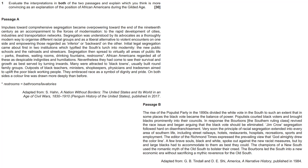Nevertheless, they had come to see their survival and growth as best served by turning inwards. Many were attracted to black towns, usually built around family groups. Outposts of black teachers, ministers, shopkeepers, physicians, and tradesmen aimed to uplift the poor black working people. They embraced race as a symbol of dignity and pride. On both sides, a colour line was drawn more deeply than before.